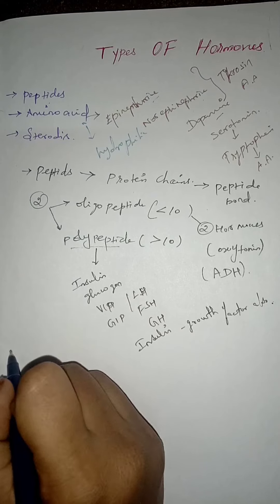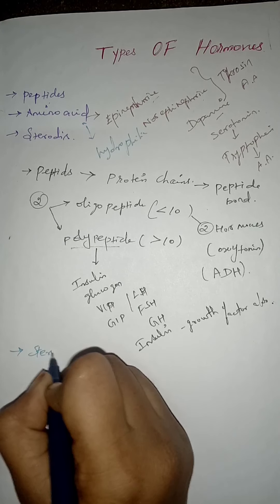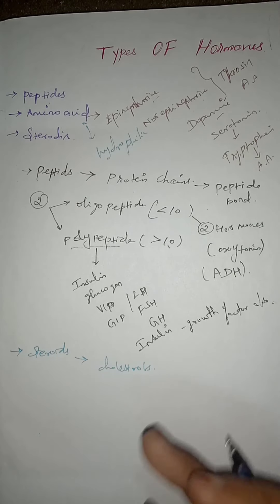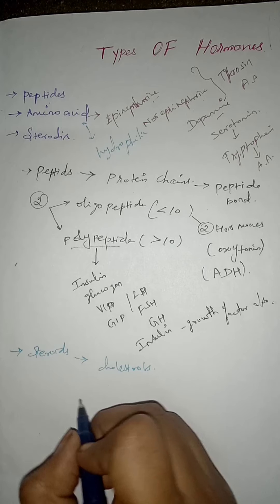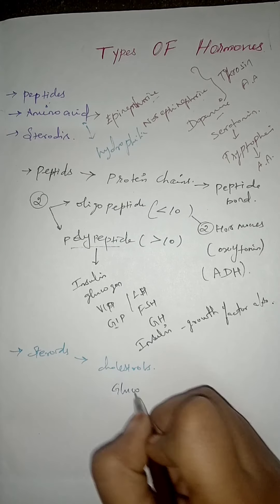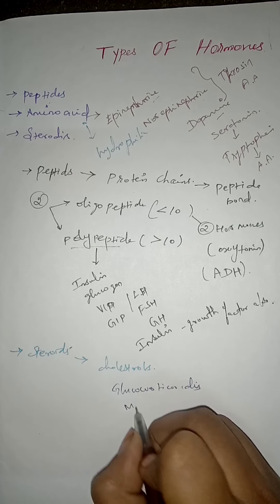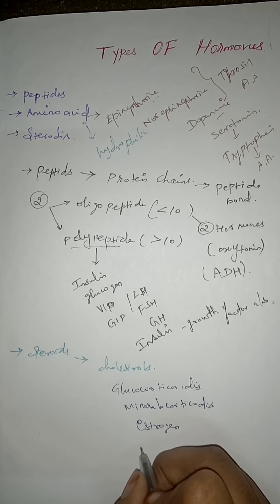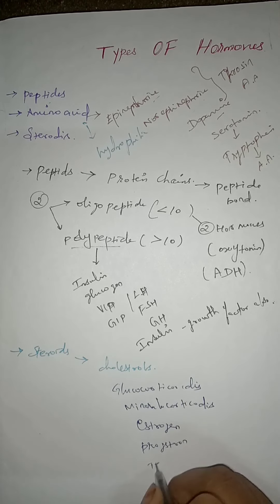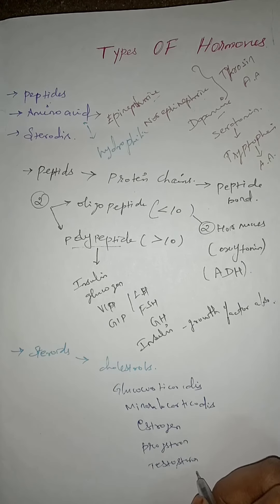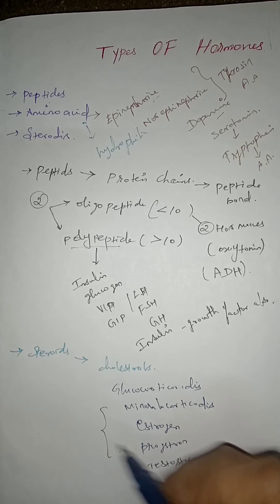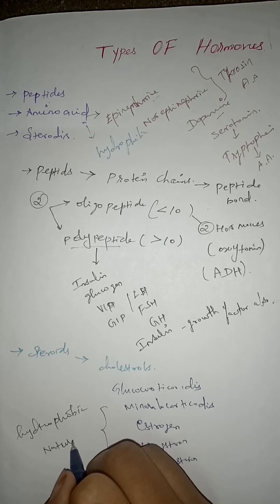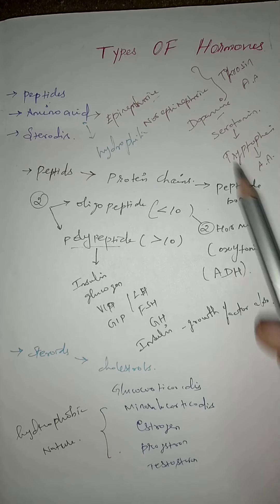Next we are going to see about steroid hormones. Steroid hormones are derived from cholesterol — they are fully formed from cholesterol. Some examples are glucocorticoids, mineralocorticoids, estrogen, progesterone, and testosterone. These are all basically hydrophobic in nature.